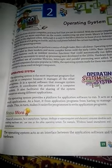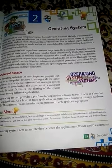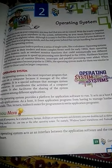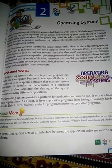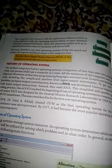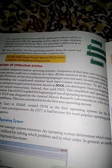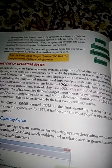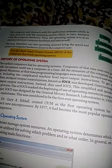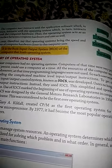The operating system acts as the interface between the application software and the computer hardware. The user interacts with the application software, which in turn interacts with the operating system, which in turn interacts with the computer hardware. Thus, the operating system acts as an interface between computer hardware and the user.